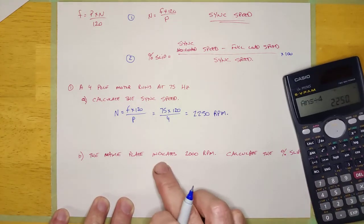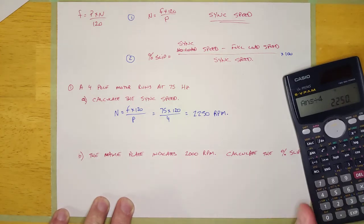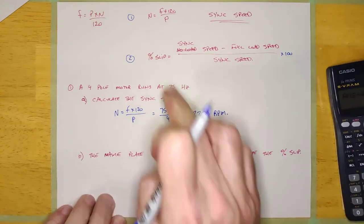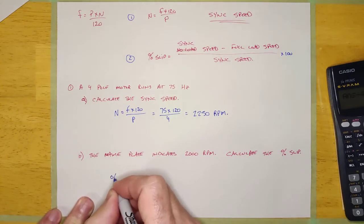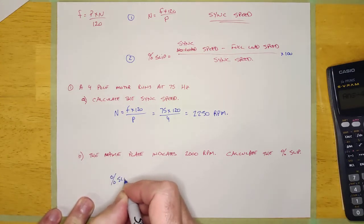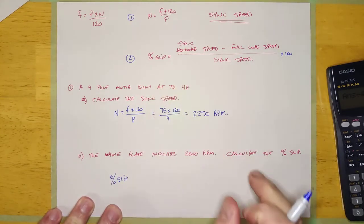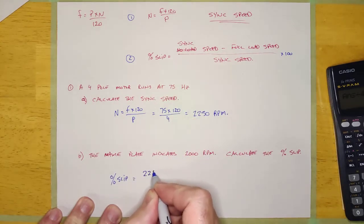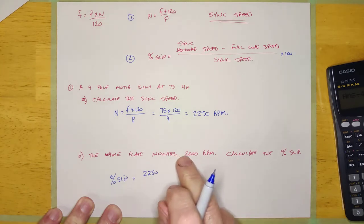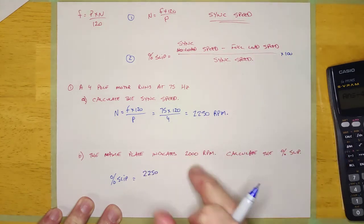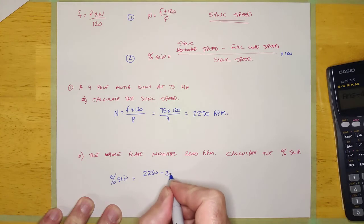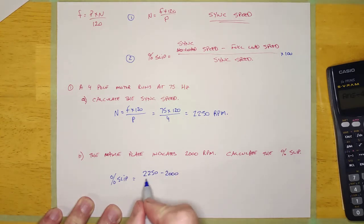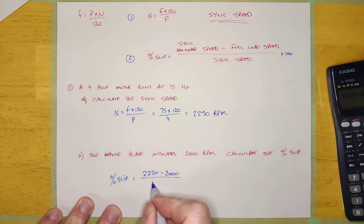Now this same motor, the nameplate indicates it runs at 2,000 RPM. Calculate the percent slip. So let's do that. We're going to use this formula right here. Percent slip, well, it should be the sync speed, which we just calculated. 2250 minus the full load speed or actual speed. In other words, this is going to calculate the amount it's slipping, and then we're going to divide it by the sync speed.